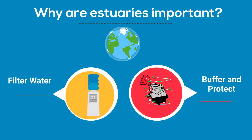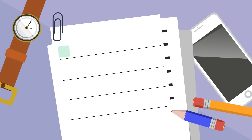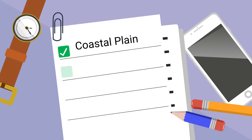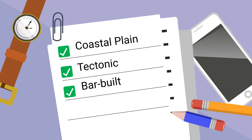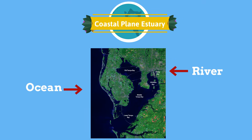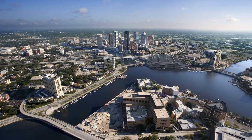Estuaries can be classified according to their geological features. The classifications include coastal plain estuaries, tectonic estuary, bar-built estuaries, and fjords. Coastal plain estuaries look like valleys with gentle sloping bottoms. Their depth increases towards the river's mouth. This type of estuary is known throughout the world. An example is Tampa Bay in the United States.